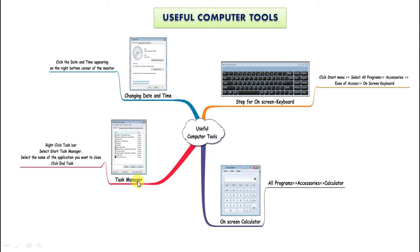The next one is task manager. Task manager helps in closing a program, not only when the program has stopped responding, but also when it is functioning properly. To use this, right click the task bar, select start task manager, select the name of the application you want to close, and click end task.